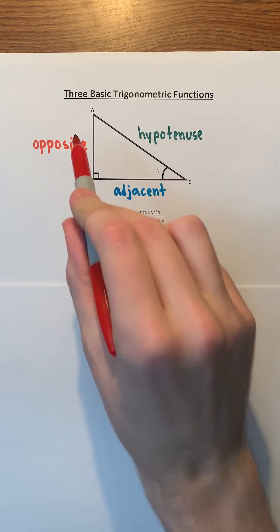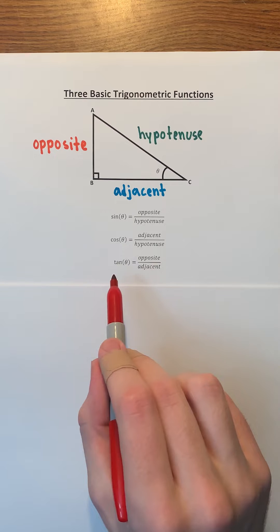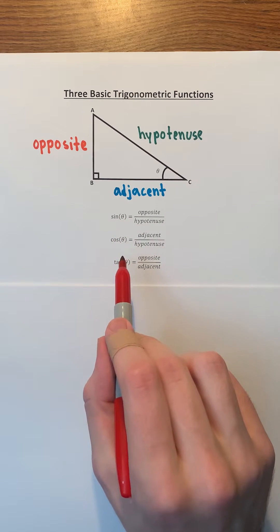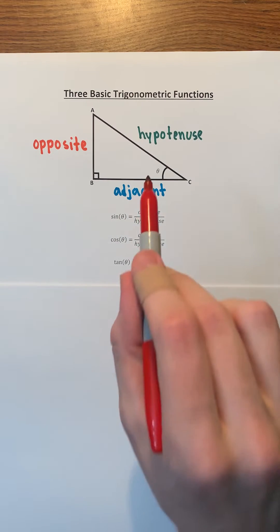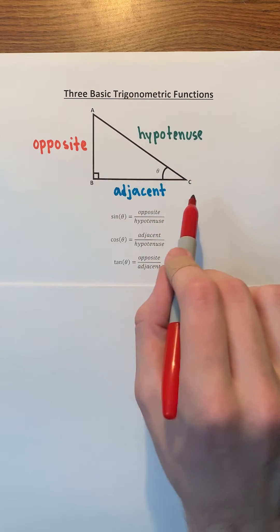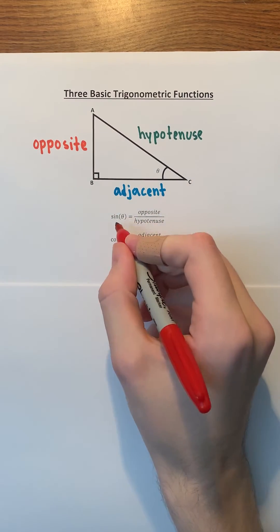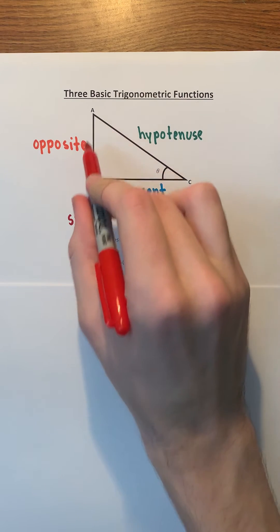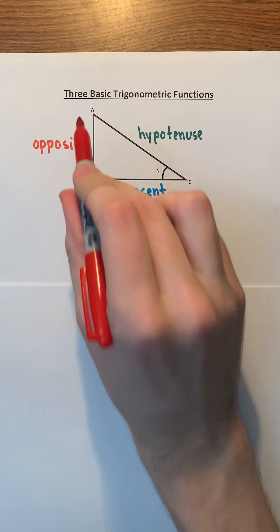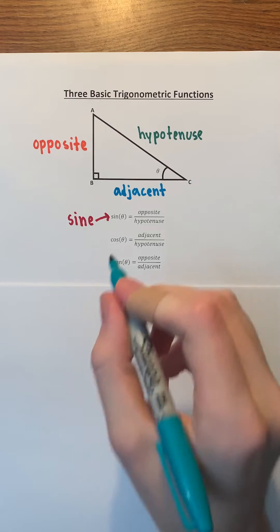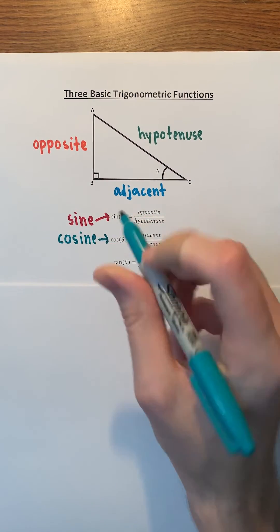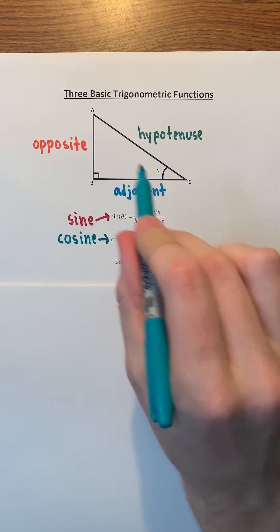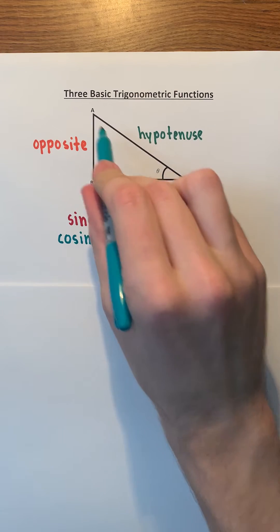From this information, we get three trigonometric functions which input an angle measure. These angle measures can be represented as theta. So let's say that theta is the measure of angle ACB. Sine of theta is equal to opposite over hypotenuse — the length of the opposite side over the length of the hypotenuse. Cosine of theta is equal to adjacent over hypotenuse — the length of the adjacent side over the length of the hypotenuse.